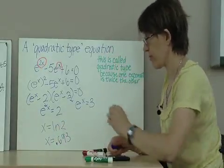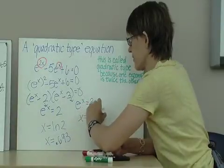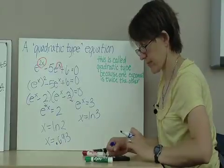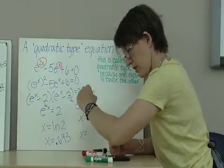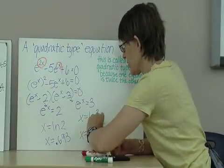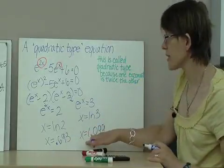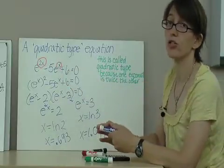And take the logarithm of 3 to get my other value for x. And that is 1.099. So these are the two values that x could have that would make this equation true.